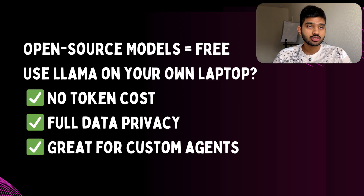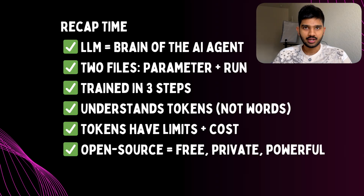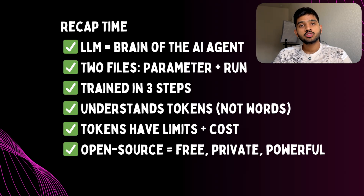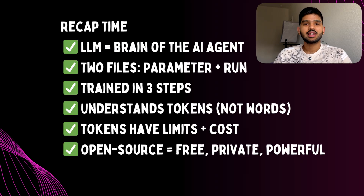If we use an open source model like LLaMA on our own computer, we can use it at no cost. To recap what we learned today: every AI agent needs a brain, and that brain is an LLM. LLMs are made of two files — a huge parameter file and a small run file. They are trained in three steps: pre-training, fine-tuning, and reinforcement learning. They use tokens, which are chunks of text turned into numbers. Each model has a token limit and some charge per token. And open source models are free to use and can be run locally. That's all for Day 4 — please comment, like, share, and don't forget to subscribe!